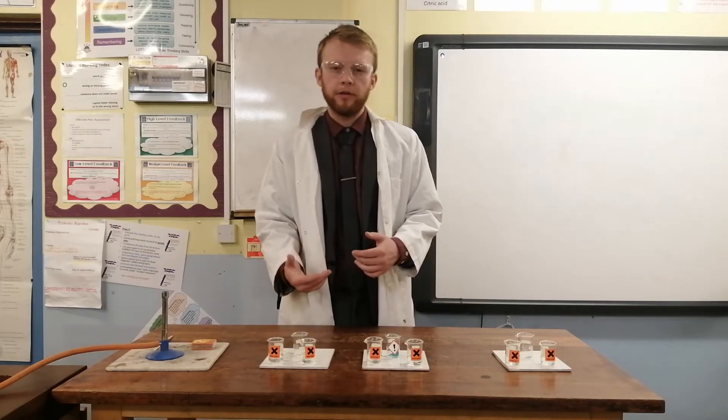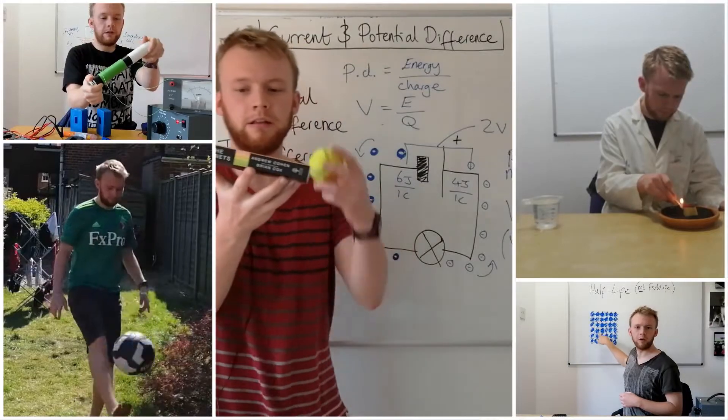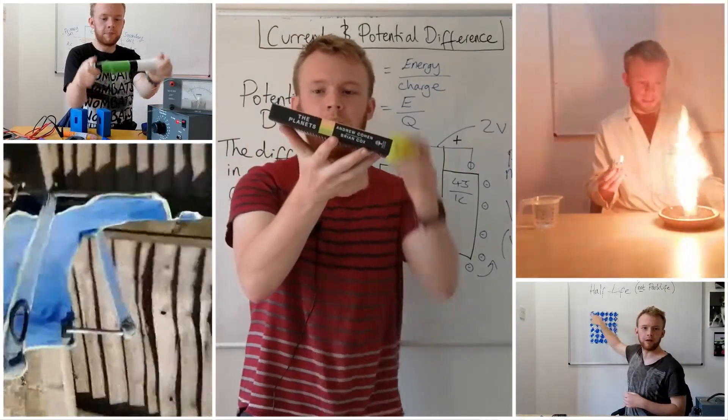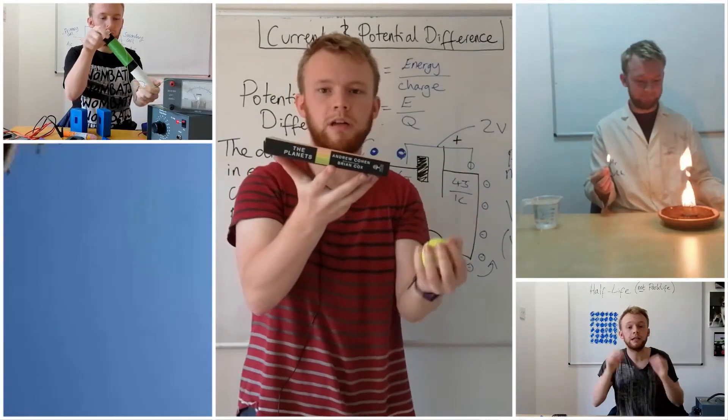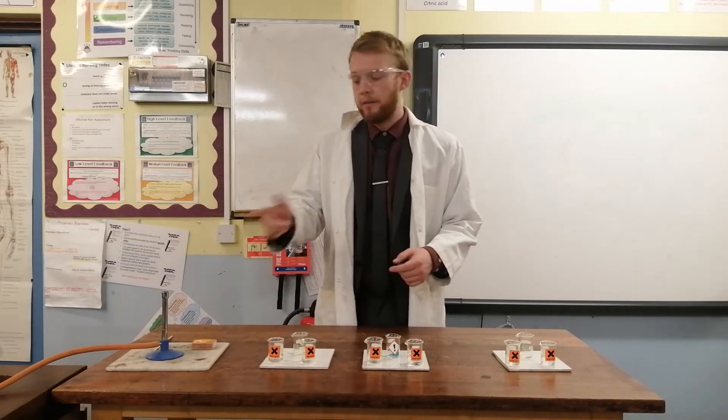In this video I'm going to show you how you can use a flame test to test for different metal ions, different cations. I've got some example metal ions here and I'm going to test them to see what colour they turn a Bunsen flame, to help me try and identify what metals they are. Now there's a specific procedure for that which I need to follow.